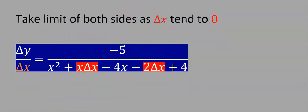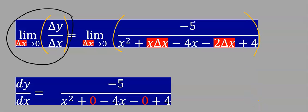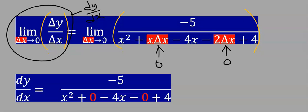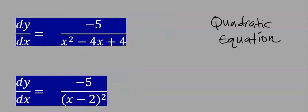Next, take the limit of both sides as Δx tends to zero. On the left-hand side, taking the limit of Δy/Δx gives dy/dx. On the right-hand side, wherever I see Δx I replace it with zero. After the limit, removing the zeros, we now have this expression. Using any method of simplification for this rational expression, this becomes our dy/dx, which is our final answer.